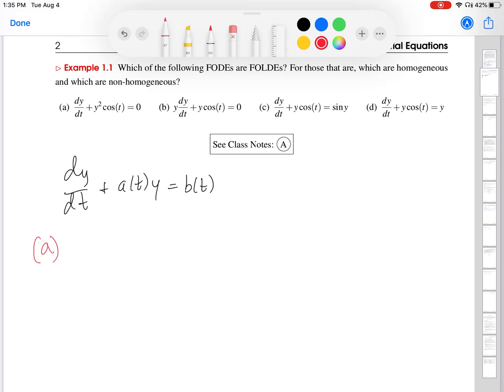Let me first write down that standard form that we're going to be comparing these ODEs to. So, that was DY over DT plus A of T, Y equals B of T. And then we'll talk about homogeneous and non-homogeneous once we get there. So, then let's go to the first example, A.